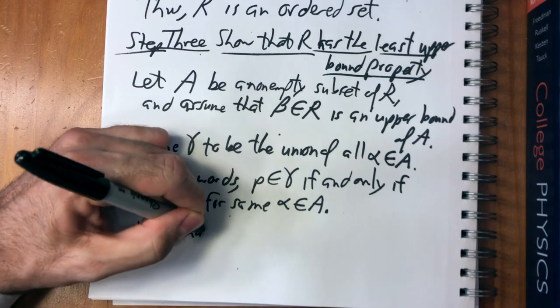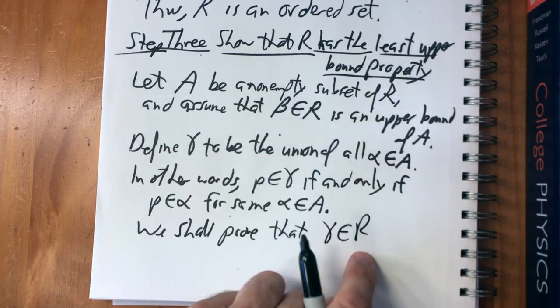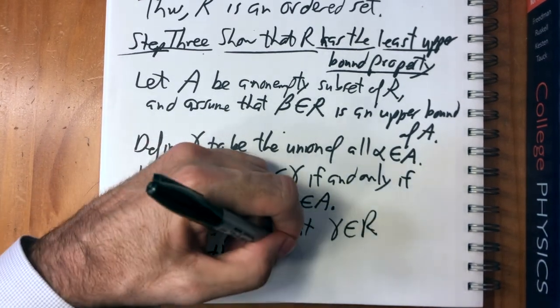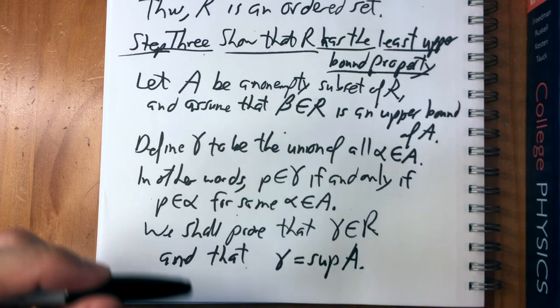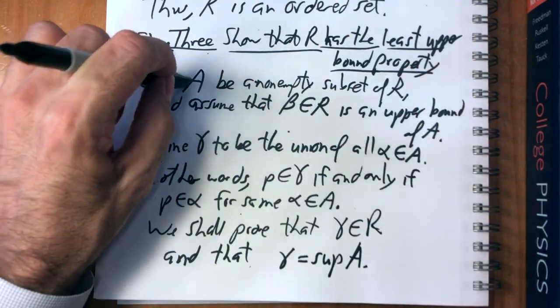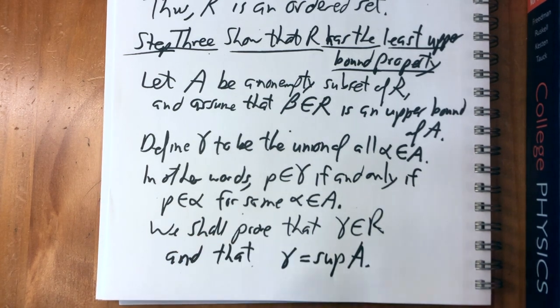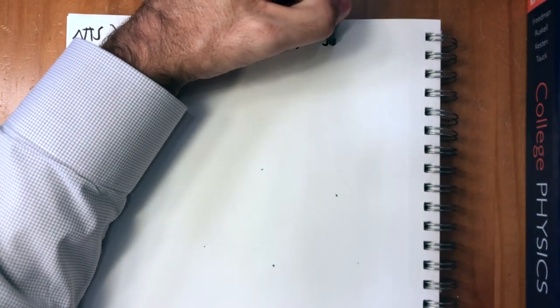We have to do two things: first show that gamma is an element of R, then show that gamma is the supremum of A. To show gamma is an element of R, we need to verify the three rules for cuts. Rule one: alpha is not empty and alpha is not all of Q. Rule two: if P is an element of alpha, Q is a rational number, and Q is less than P, then Q is also an element of alpha. Rule three: if P is an element of alpha, then P is less than R for some R element of alpha.